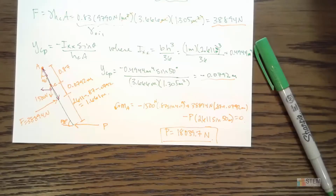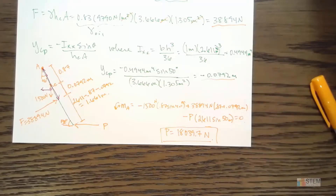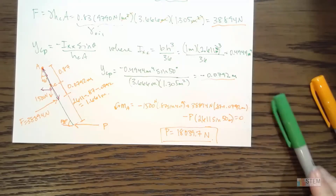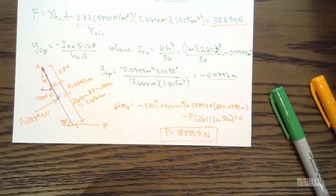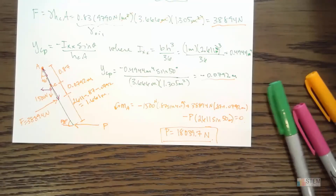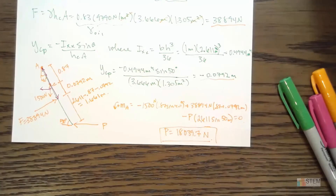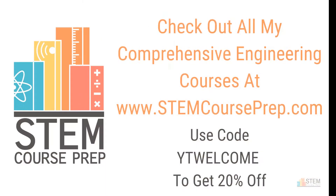That's how you use the force equation and Ycp to figure out where the fluid force acts on a gate or surface, and then use a moment equilibrium equation to find the required balancing force. Hopefully you found that helpful — see you next time for another problem.